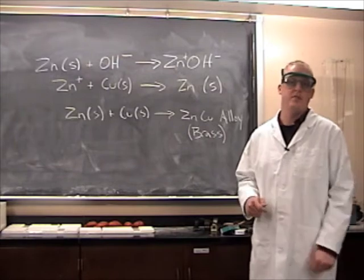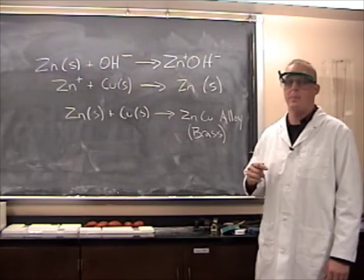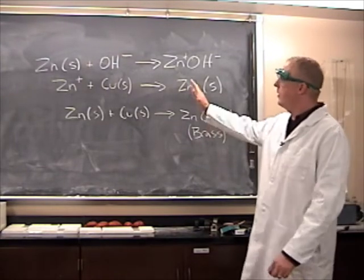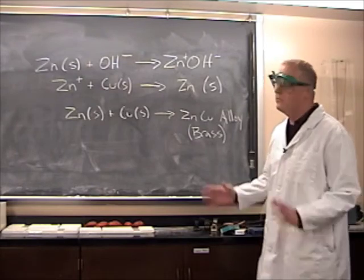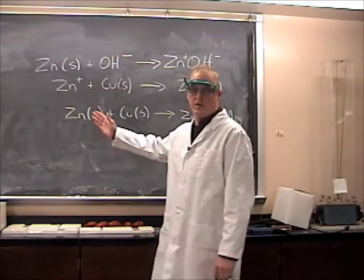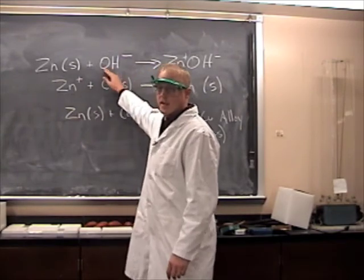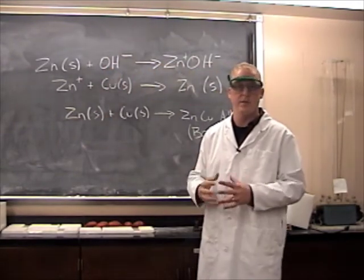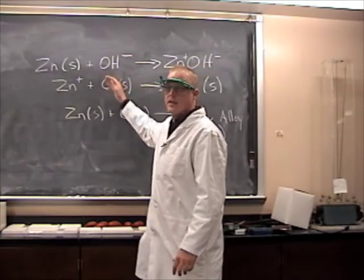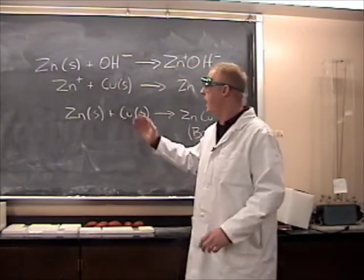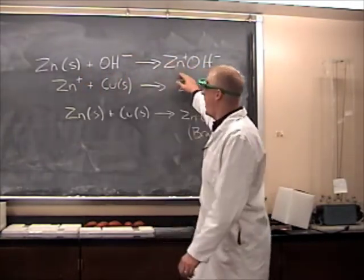Hi, we're going to talk about the chemistry behind turning copper into gold. Here we have all the equations right on the board. Don't be scared by the equations, but we're going to talk right through them. Zinc and sodium hydroxide. Sodium hydroxide and zinc was what was in that first beaker. The sodium hydroxide is a super strong base. It reacts with that zinc and turns it into an ion.